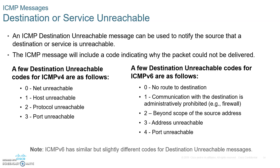Destination or service unreachable is a message to let the sender know that the destination is unreachable. The codes for IPv4 are somewhat different than for IPv6, as you can see on the slide.